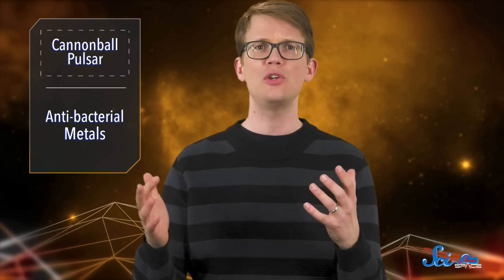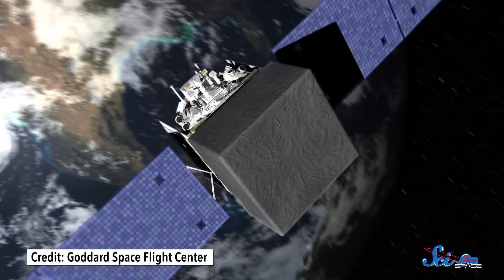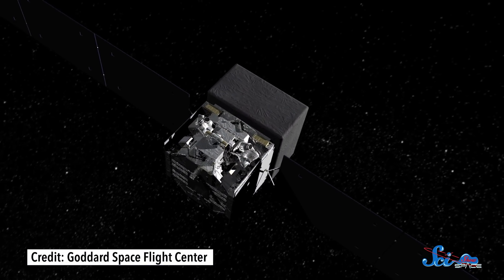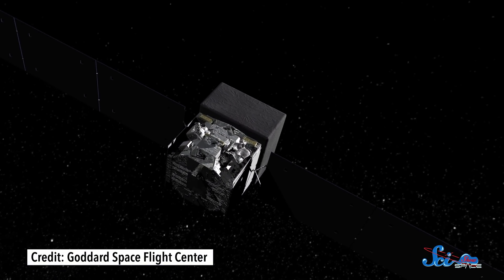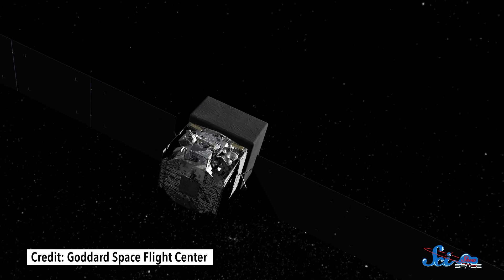For this new discovery, researchers used the equivalent of 10,000 years of computing time to search observations made by NASA's Fermi Gamma Ray Space Telescope. They discovered 23 pulsars, but J0002 really caught their eye.